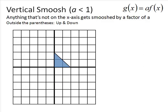Now vertical smush, as we said, is any time that A is less than 1, it's going to get smushed by that factor. So if you had 1 half, now anything that's not on the x-axis is going to get smushed toward the x-axis. So here we've got these points are going to stay where they are, but this one up here, it's at 2, so I'm going to multiply it times a half to get 1, and I'm going to smush it down toward there. So it's now half as tall as it was before.